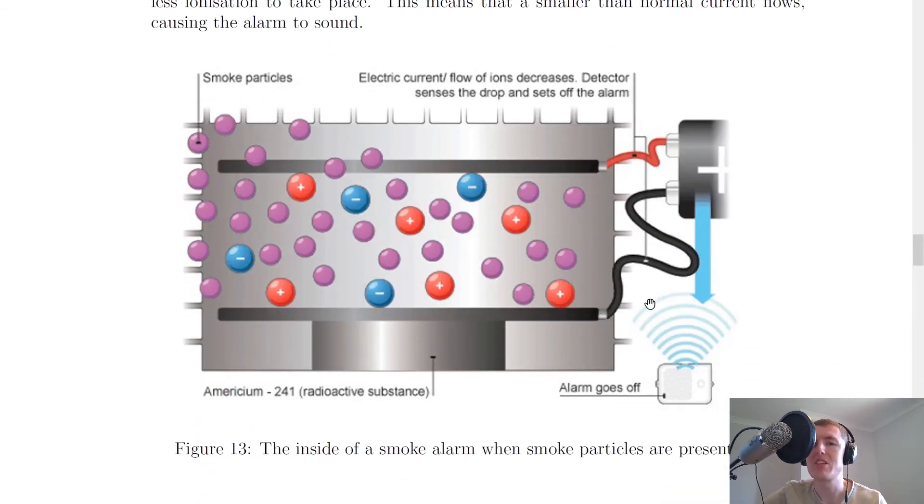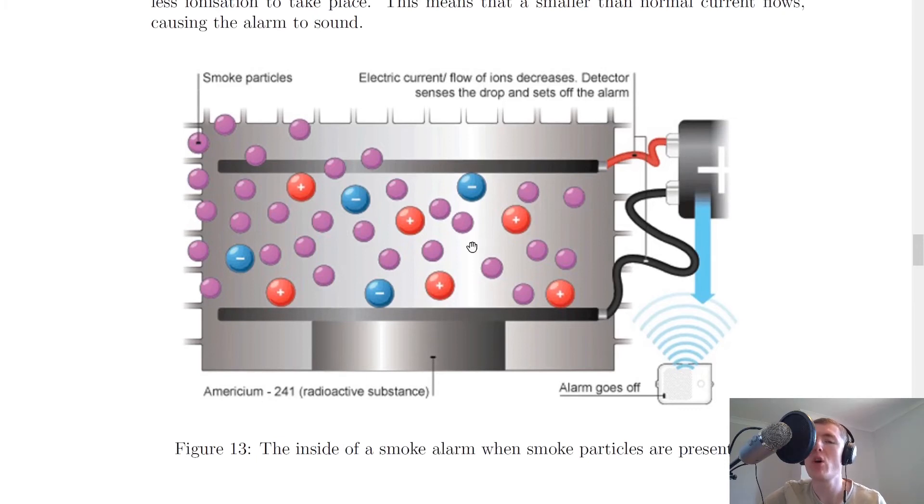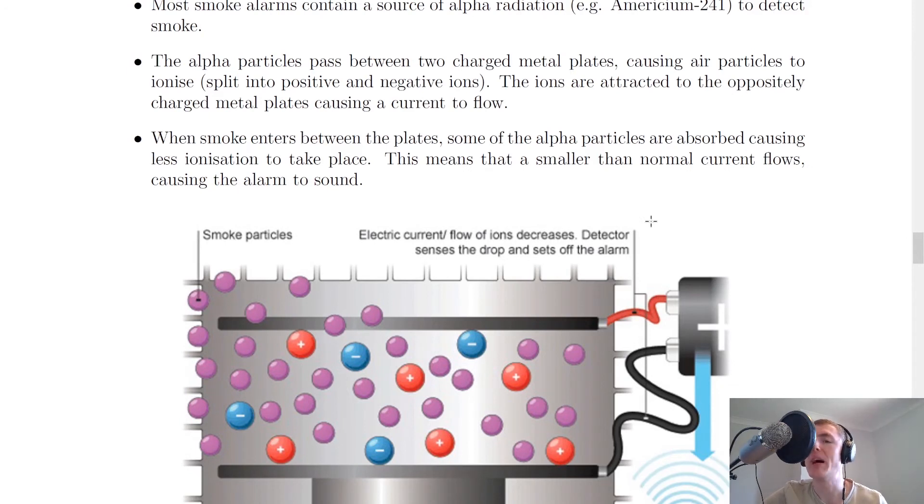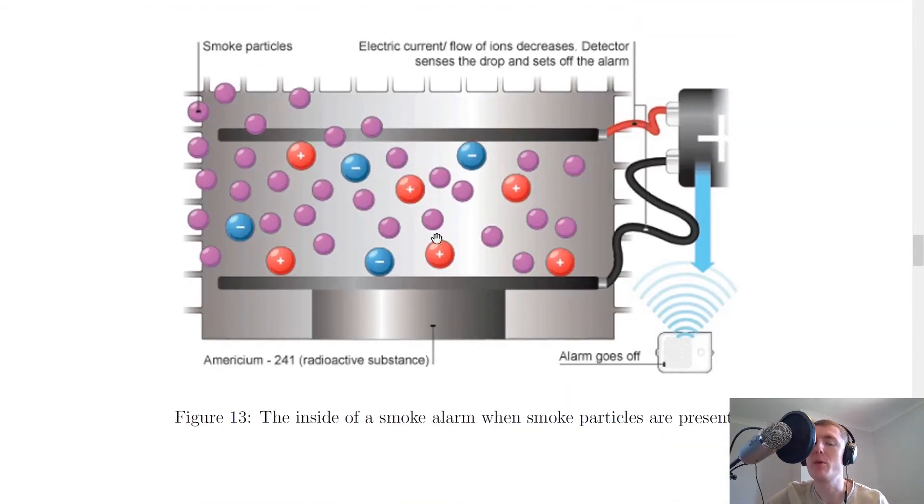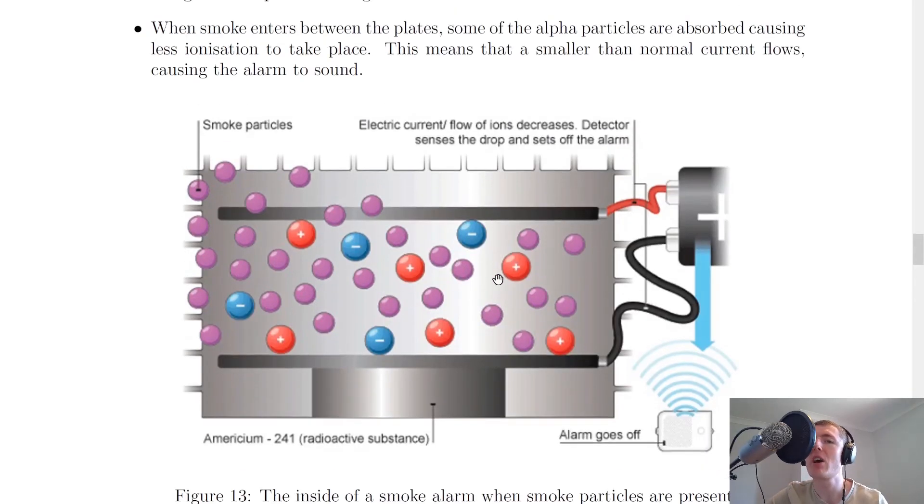Here's a picture of two metal plates, and the air particles will be inside the two metal plates. Here's our americium-241 source, and it will be emitting alpha particles. The alpha particles passing between these two plates will cause the air particles to ionize. This causes the formation of positive and negative ions. Just like we saw for the Geiger-Muller tube in the detecting radiation video, the ions are attracted to the oppositely charged metal plates, causing a current to flow. We have our positive ions that would be attracted to the negative plate, and our negative ions that would be attracted to the positive plate. This current will continue to flow because you're always going to have air particles between the plates, and the alpha source is always emitting alpha particles. The current flow is there because of the movement of charge.